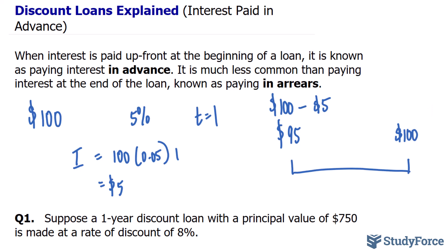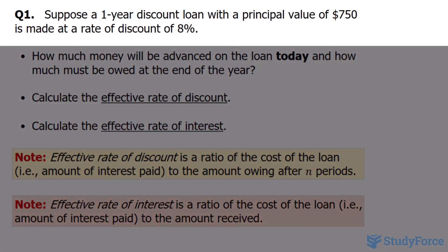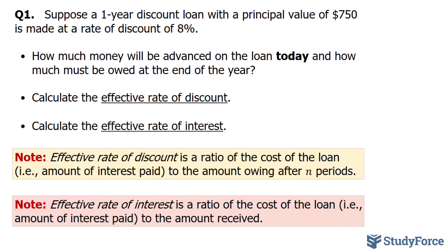And so let's take a look at some questions involving discount loans. That way we understand it better. The first question asks, suppose a one year discount loan with a principal value of $750 is made at a rate of discount of 8%. Now immediately, we know that the interest will be paid up front, because we're told that it is a discount loan.